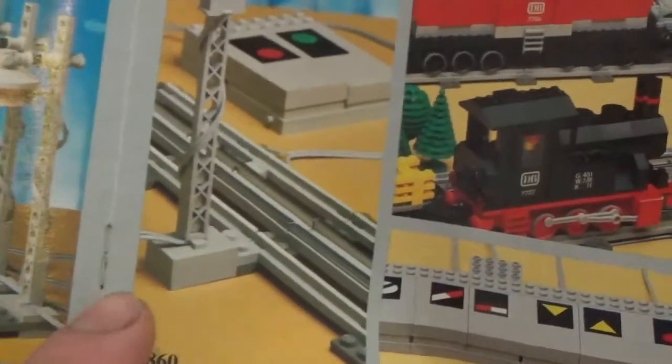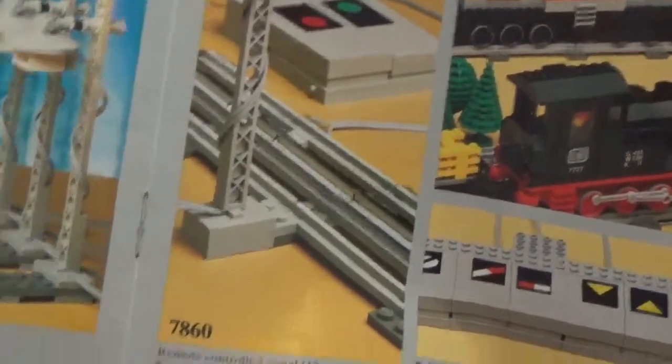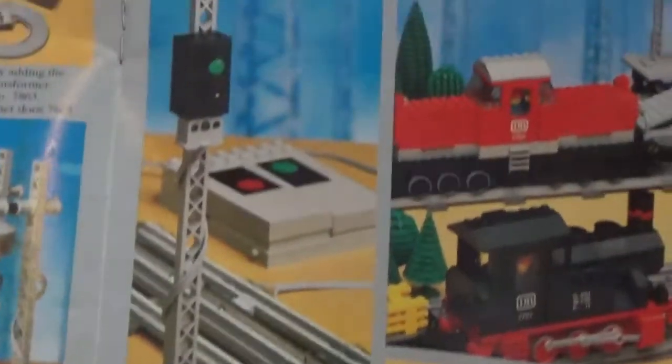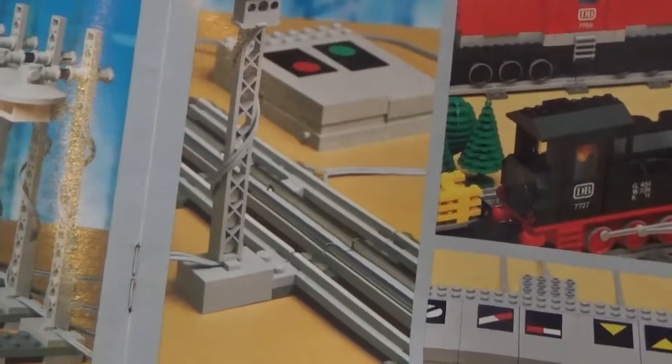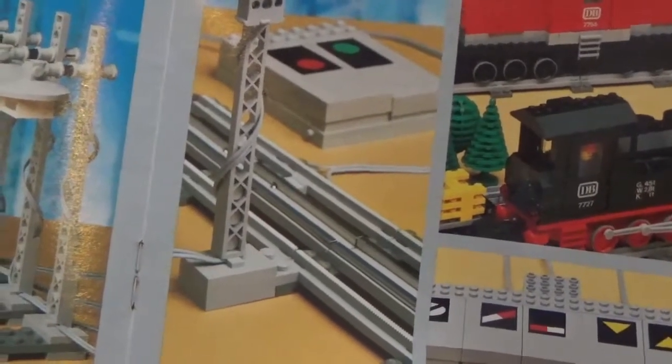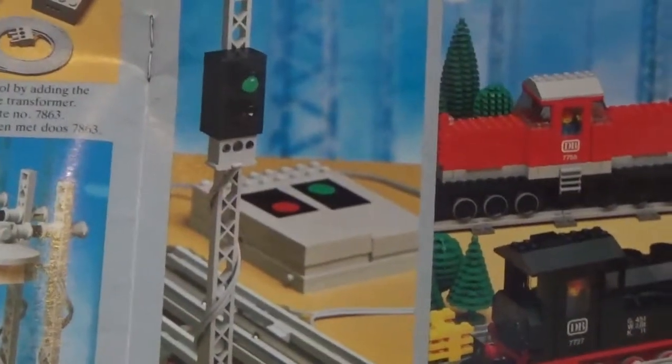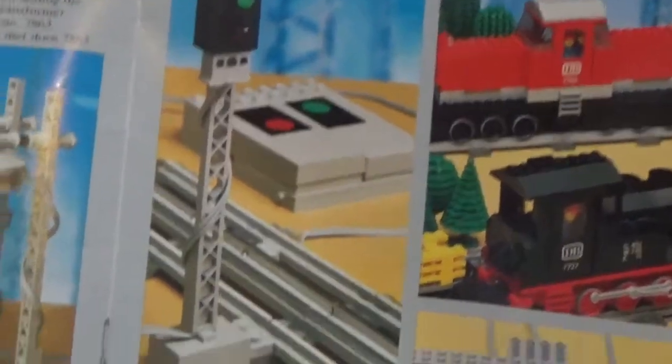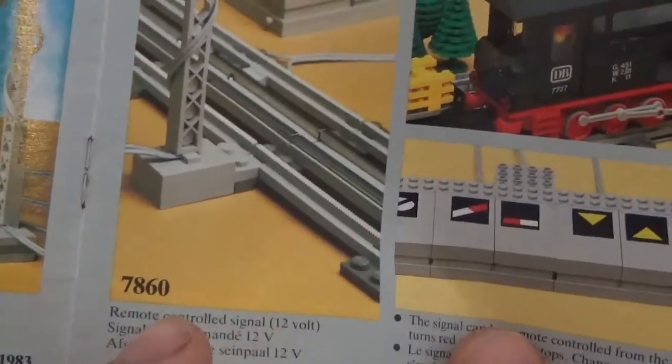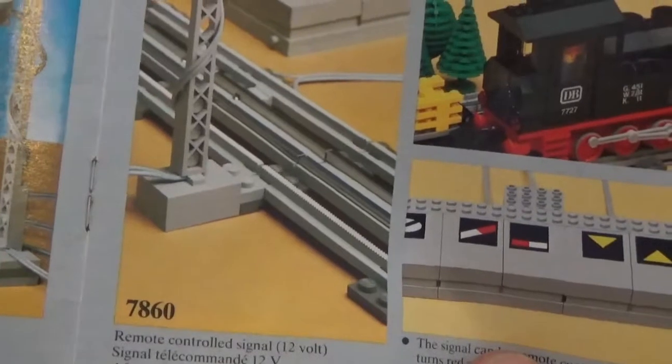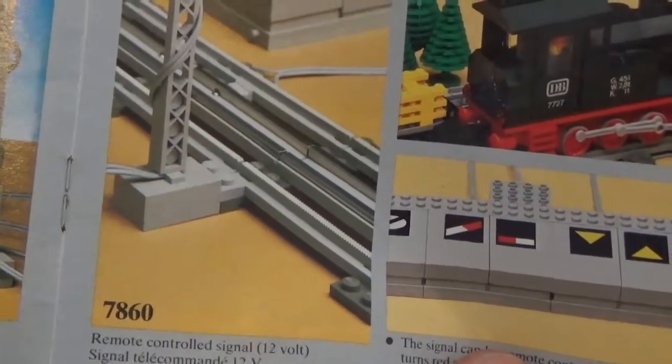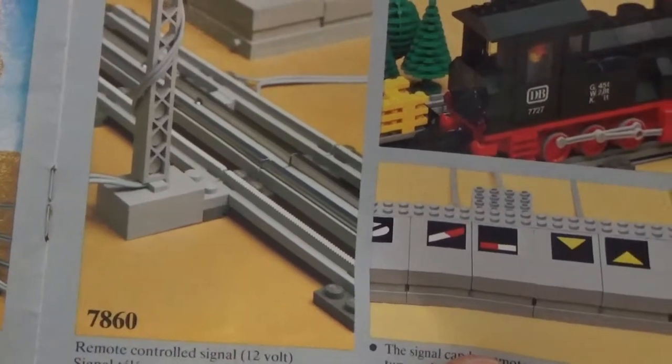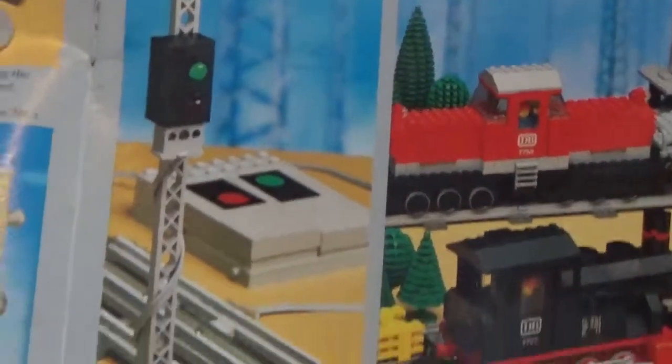Set number 7860, it's an accessory set for the LEGO 12 volts trains. I'm not gonna go through details of how it works, but if you just Google very briefly on YouTube you're gonna find a couple of youtubers that posted detailed reviews about it.